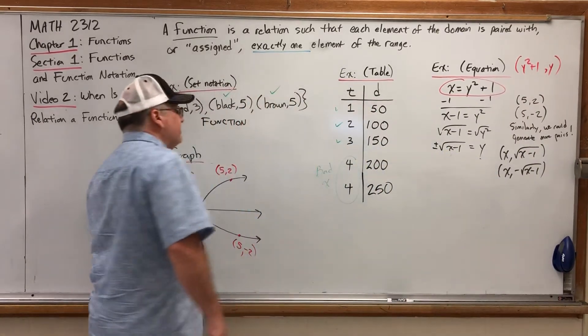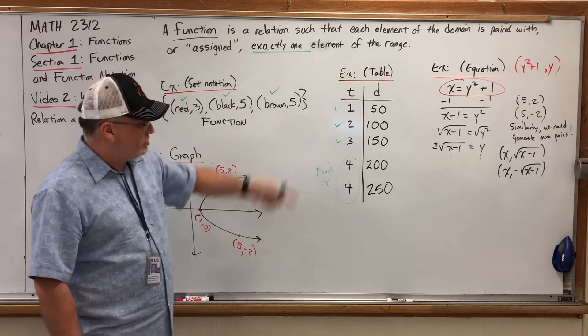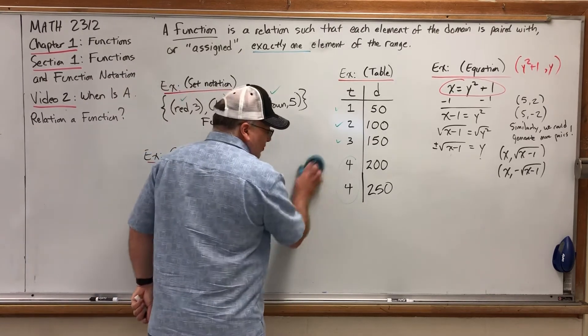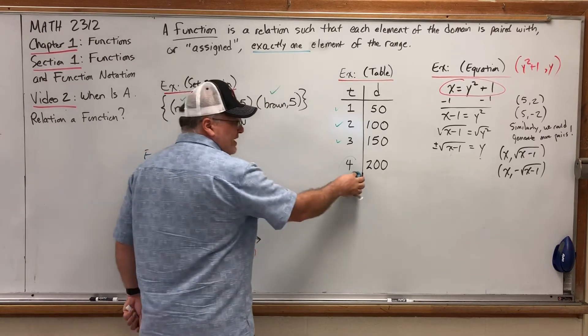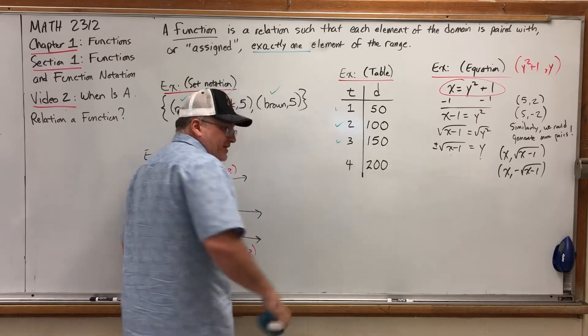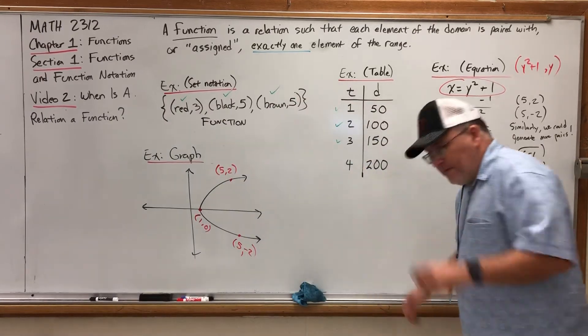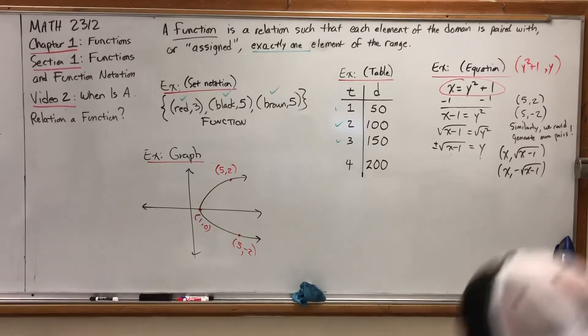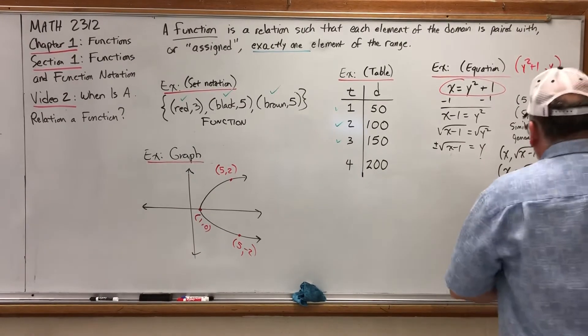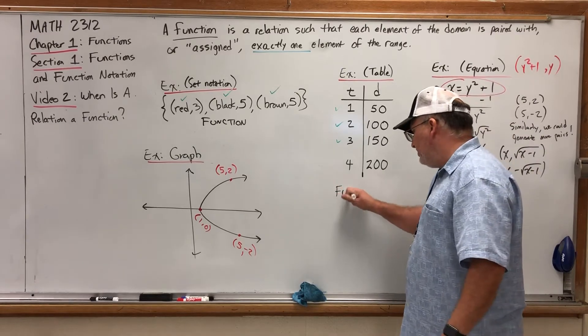So to summarize, if you have a relation written in set notation or as a table, it's pretty easy to identify something that is not a function. You simply find a repeated X that has multiple Y values paired with it. Or more generically, you find a repeated element of the domain that has multiple elements of the range paired with it. But back to its original state, this is a function.